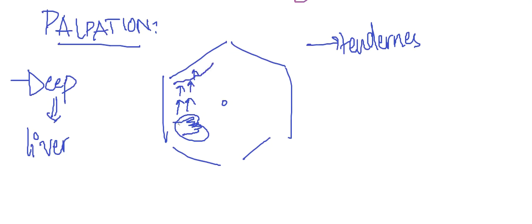The second method for liver palpation is to place the hand parallel to the costal margin directly. From there you can find the inferior border of the liver, felt against the index finger. Do not place the hand over the rectus abdominis — if you do, you will not see any of the findings.